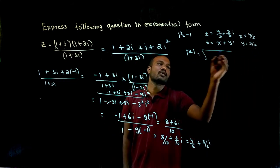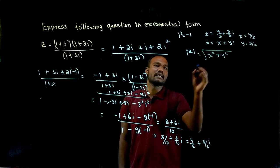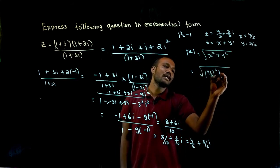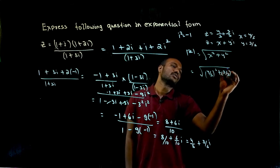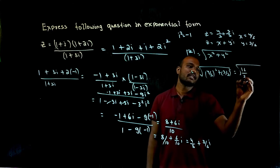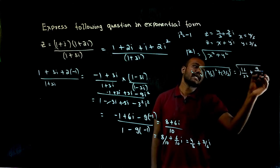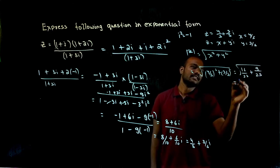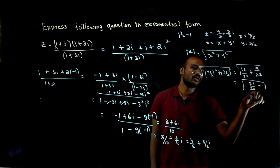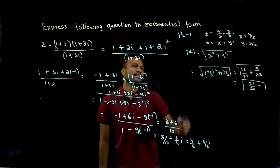So modulus of z is what? Root of x square plus y square. So root of what is the value of x? 4 by 5 whole square plus 3 by 5 whole square. So if I solve this: 4 square is 16 by 5 square is 25, plus again 3 square is 9 divided by 25. So if I solve this: 16 plus 9 is 25 by 25, that is equal to 1. Root 1 is 1.